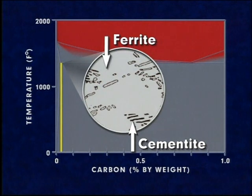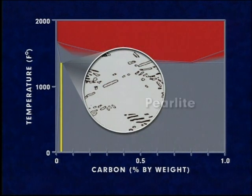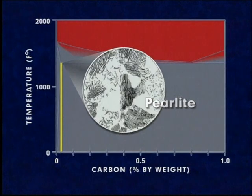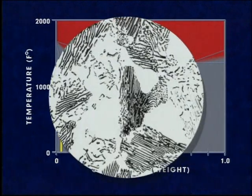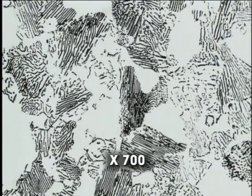This structure is referred to as pearlite. At room temperature, the steel is mostly ferrite with patches of pearlite.